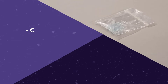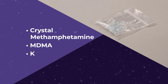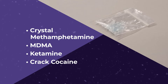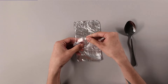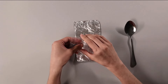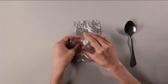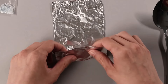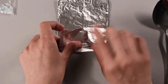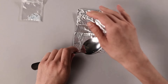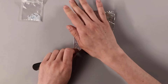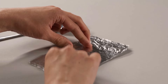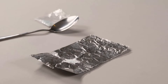To prepare crystal methamphetamine, MDMA, ketamine, or crack cocaine that often come in larger crystals or rocks, place a small amount of the drug onto a piece of paper or clean aluminum foil. Fold the paper or foil so the drug sample is contained inside, a bit like an envelope, and press the package with the back of a metal spoon or other hard object. This will avoid pieces of the drug scattering while you crush it.